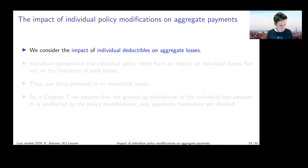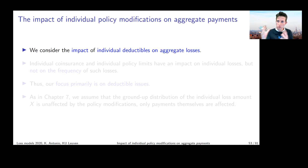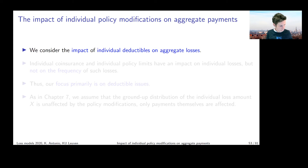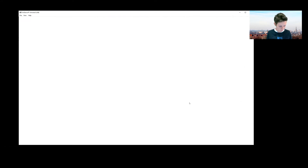We're going to do something similar here. When looking at the aggregate loss S where each term in our compound sum is subject to a deductible, we want to see what is the impact of individual policy modifications — specifically deductibles. How can you express the impact of having individual deductibles on aggregate payments? I'm going to flip the order of my explanations slightly because I think it makes more sense.